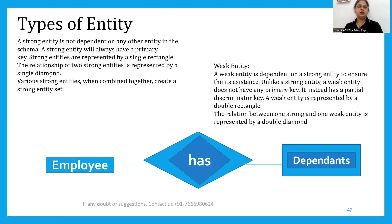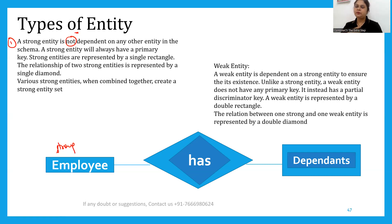In this video we are going to discuss the various types of entity. The first entity is a strong entity. A strong entity is not dependent on any other entity in the schema. For example, a member who is earning a salary is strong. A strong entity will always have a primary key and it is represented by a single rectangle.